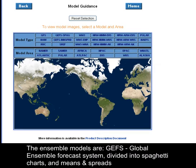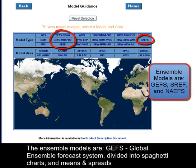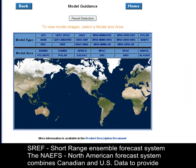The Ensemble Models are GFS — Global Ensemble Forecast System — divided into Spaghetti Charts and Means and Spreads; SREF, the Short Range Ensemble Forecast System; and the NAIFS, North American Ensemble Forecast System, which combines Canadian and U.S. data to provide Forecast Guidance up to 16 days.